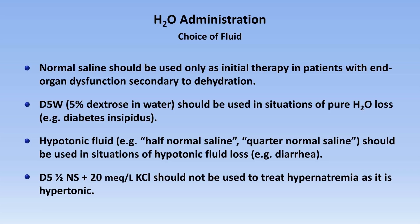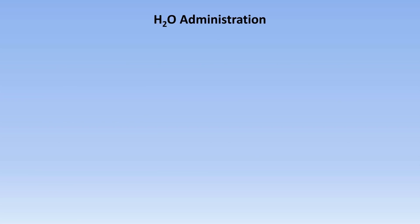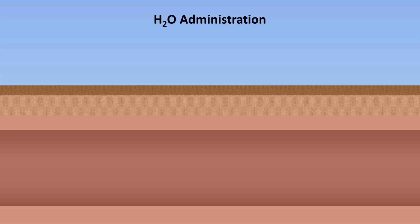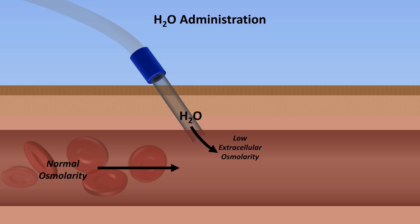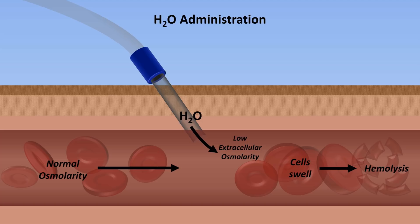You may be wondering why we can't just give plain water — why are the only choices salt water or sugar water? If you infuse pure water into a vein, it dilutes the serum sodium and everything else, creating low extracellular osmolarity. The consequence is that red blood cells begin to swell and, if severe enough, will result in hemolysis. Infusion of sugar water — D5W — is a neat way to get around this: because glucose is osmotically active, it doesn't result in hemolysis within the blood vessel. And as it circulates throughout the body, the glucose is taken up by cells such that it doesn't accumulate and cause hyperglycemia or worsened hyperosmolarity.